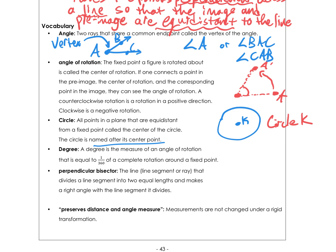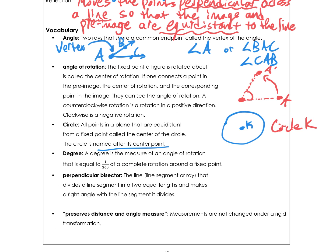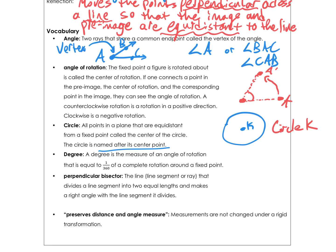A degree is how we measure how much we rotate. It's 1/360th of a complete circle.